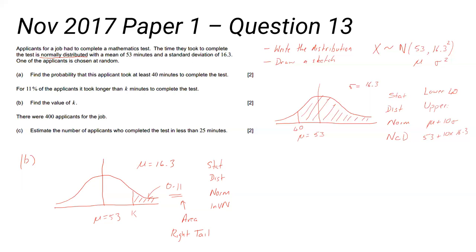That's what to look for in a normal distribution question: write the distribution down, draw the sketch, and expect that to come up. The next one: there are 400 applicants for the job, estimate the number of applicants who completed the test in less than 25 minutes. Now this is quite a nasty question actually, because it requires you to do another calculation. Normally they would use a value you've already got, but you actually need to do another normal distribution calculation. So we need to do another sketch. Mu is 43... How many completed in less than 25 minutes? So here's 25.